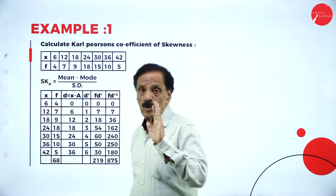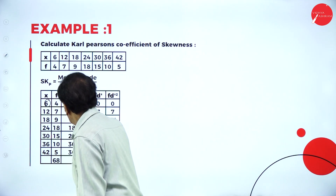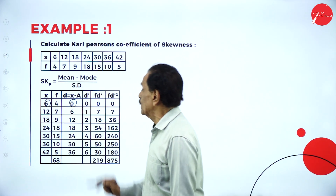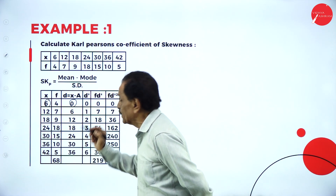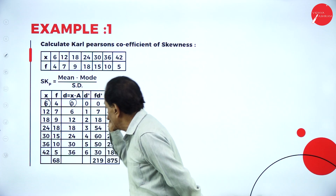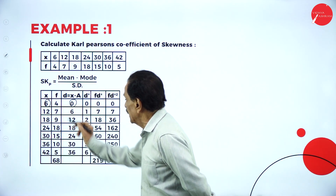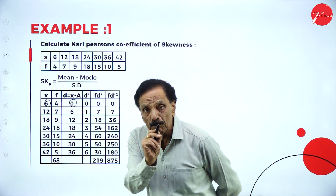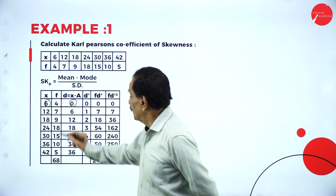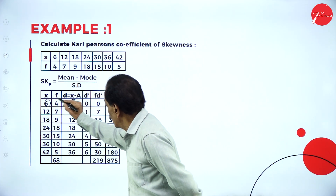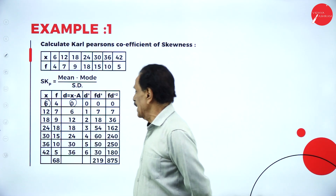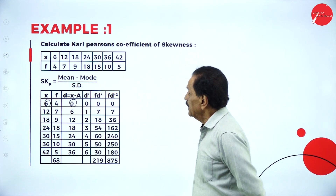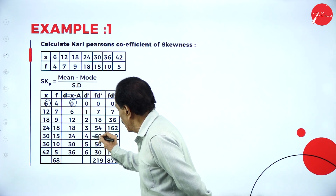Take the lowest value and put it as 0. The lowest value here is 6. Put it as 0. The difference between 6 and 12 is 6; 6 and 18 is 12; 6 and 24 is 18; 6 and 30 is 24; 6 and 36 is 30; 6 and 42 is 36. So you put the lowest number as 0, then take the differences. Then D dash: first number as 0, 1, 2, 3, 4, 5, 6.